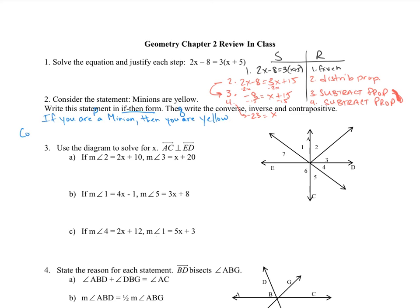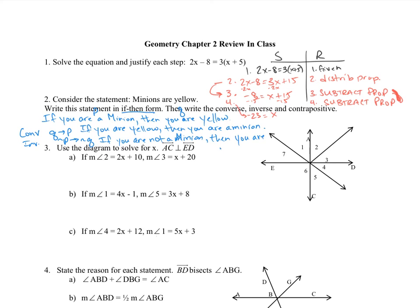For the converse, Q goes to P, so we flip it around and say: if you are yellow, then you are a minion. Then the inverse is not P goes to not Q: if you are not a minion, then you are not yellow.